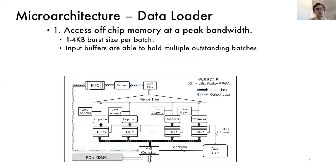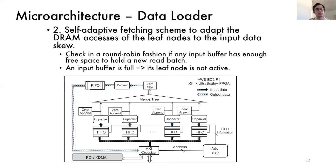Next, we want to specifically present two important considerations that enable our design to work efficiently. The first is data loader. To access off-chip memory at its peak bandwidth, the data is loaded in one to four kilobyte batches in sequential for each leaf node. The input buffers should be large enough to hold multiple outstanding batches. Besides, to make sure the DRAM access of the leaf nodes adapt to the input data skew, the data loader needs to keep track of the buffer status in the round-robin fashion. So whenever an input buffer is full, that indicates its corresponding leaf node is not active, and the data loader will skip fetching data for this node and allocates more bandwidth for the other active nodes.